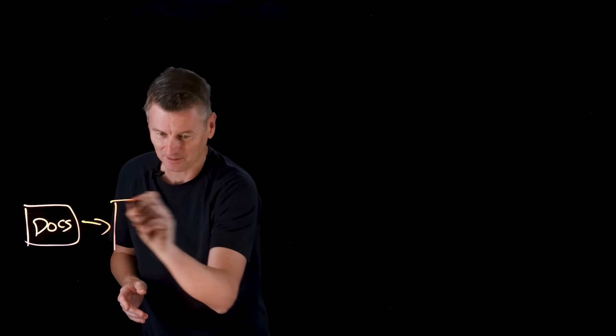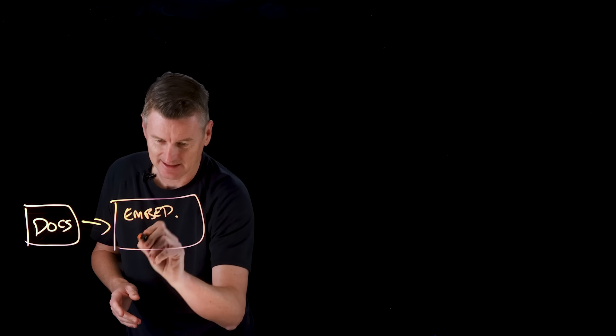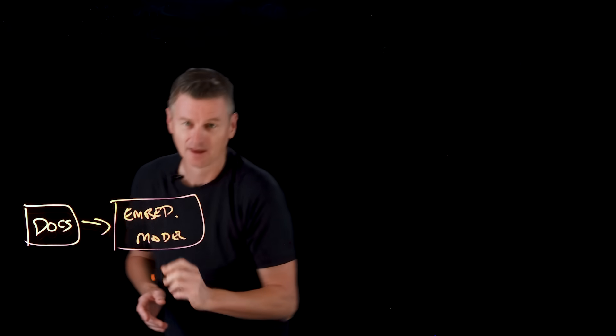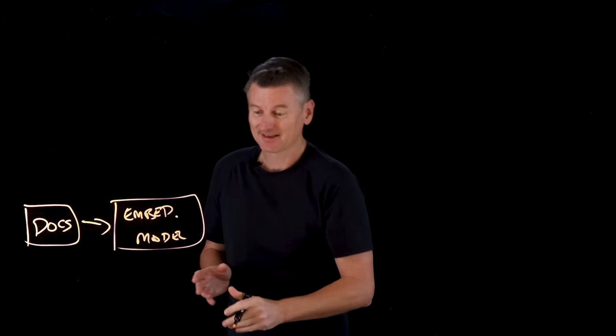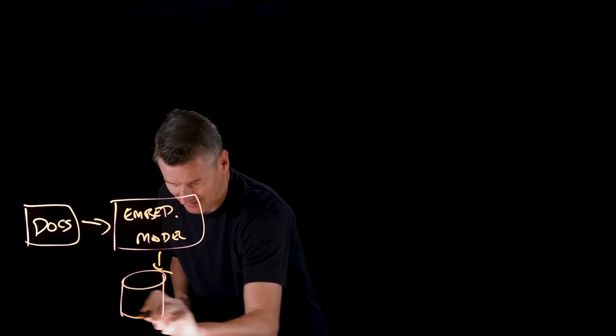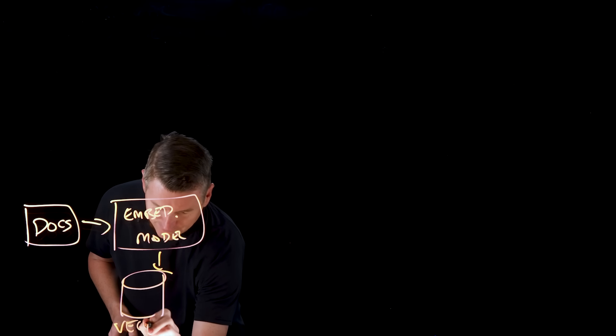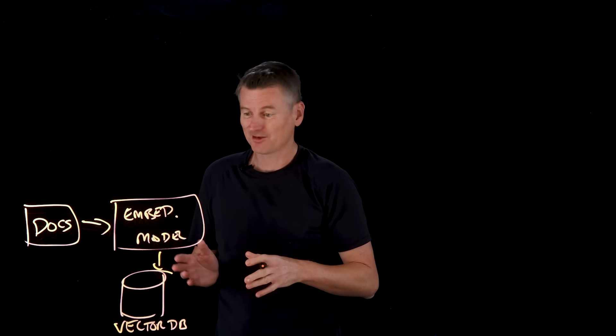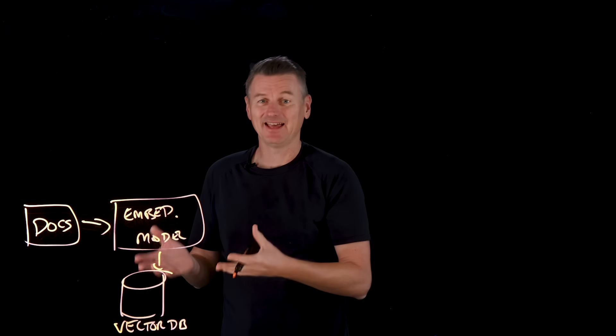RAG is essentially a two-phase system. You've got an offline phase where you ingest and index your knowledge, and then you've got an online phase where you retrieve and generate on demand. In the offline part, you start with some documents — your knowledge. This could be Word files, PDFs, whatever. You break them into chunks and create vector embeddings for each chunk using an embedding model. That embedding model creates embeddings and stores them in a vector database, where you've essentially created a searchable index of your knowledge.